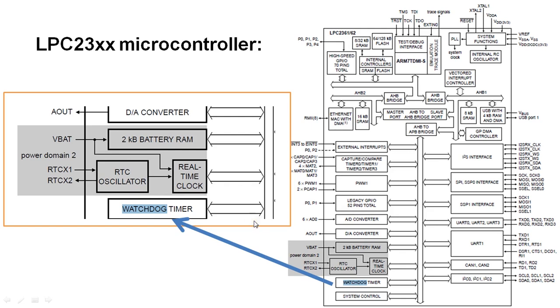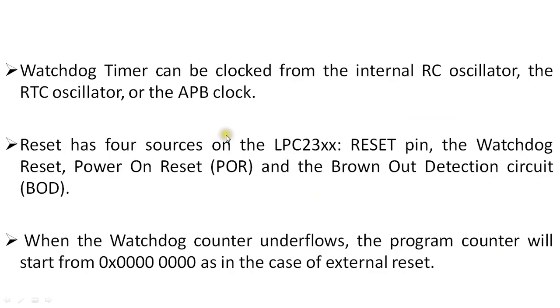This watchdog timer can be clocked from three sources: it can be clocked either from the internal RC oscillator of the microcontroller, the RTC oscillator, or from the APB clock, that is the Advanced Peripheral Bus. This is with respect to the LPC23 series microcontroller.